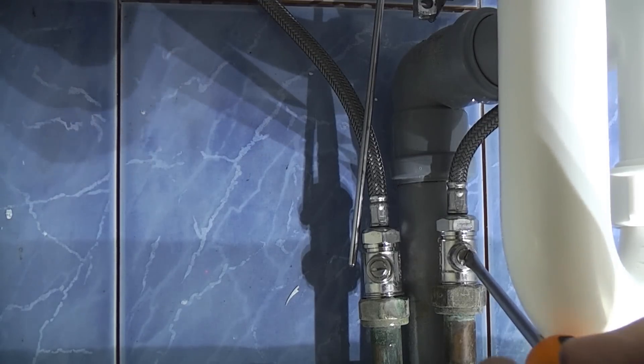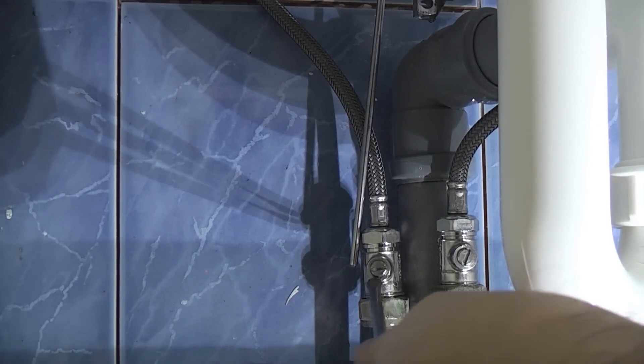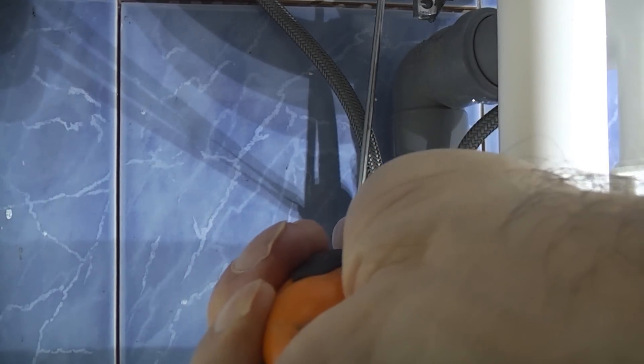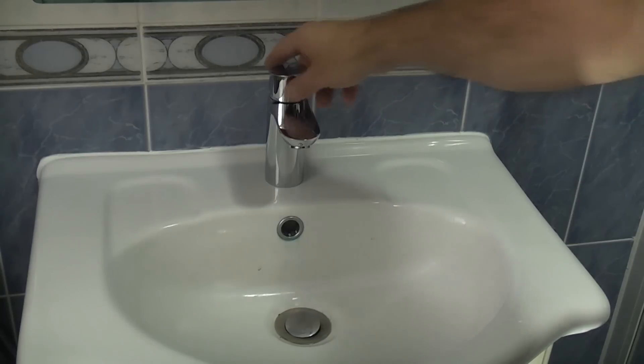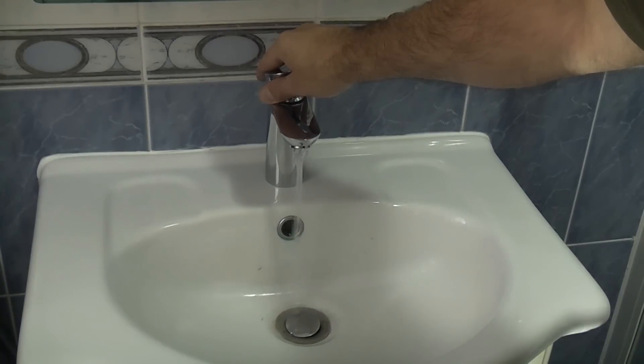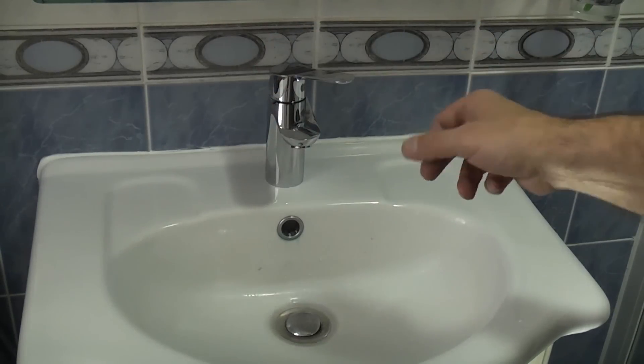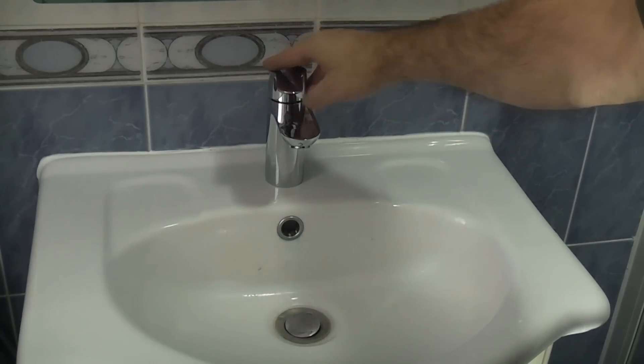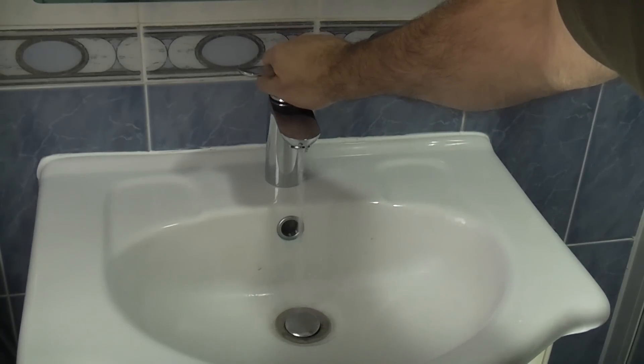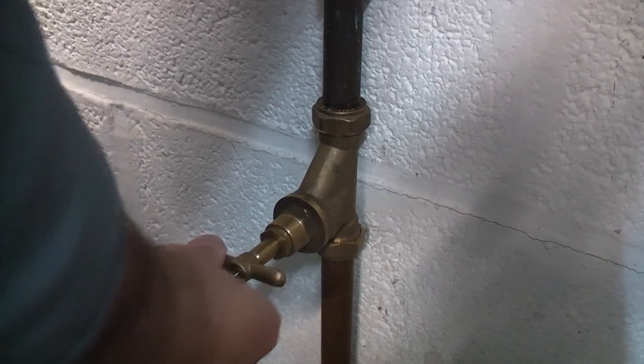And we'll open those fully. Obviously we can see there's no leaks. We'll do the same with the hot. And then we're going to slowly open the tap because there will be air in there obviously. You can see that that is working perfectly. And what I'll do is once we've got the air out of the system, you can see that we've got some air in that side. I'll then open the stop tap to where it should be.